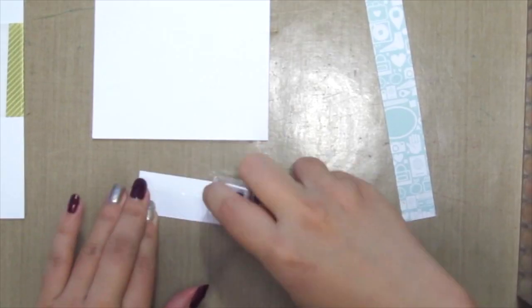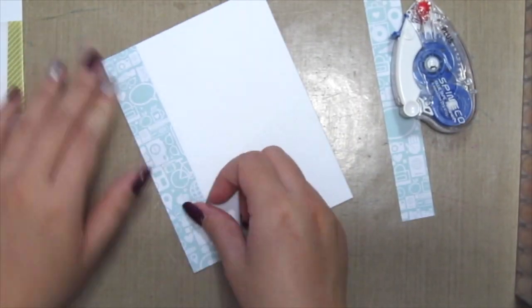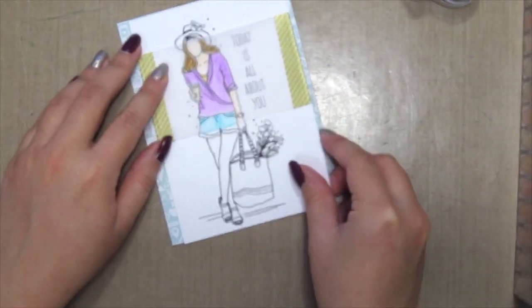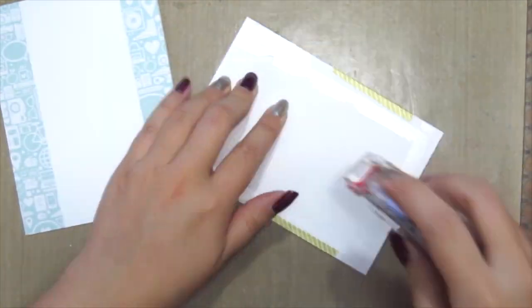Then I'm grabbing a scrap piece of paper and just putting it on the edges. This way it helps save some paper as well. And then adhering the main piece onto the card.